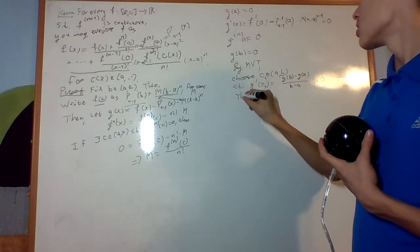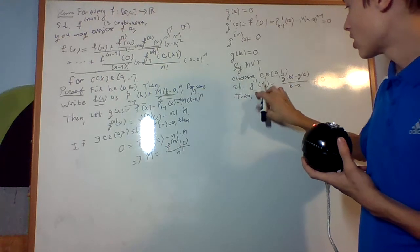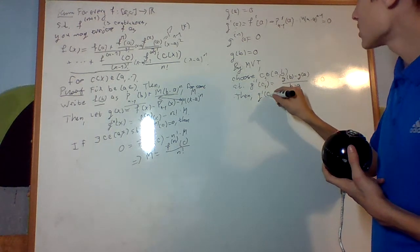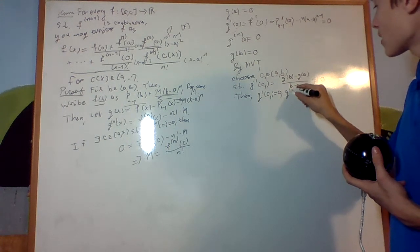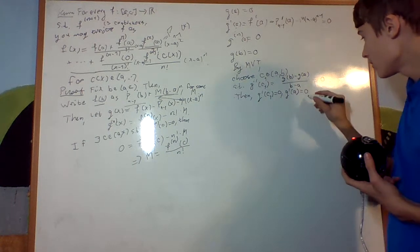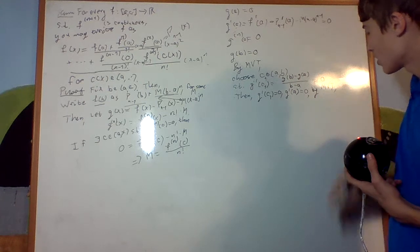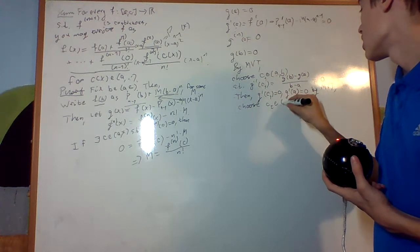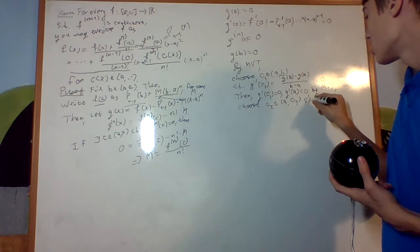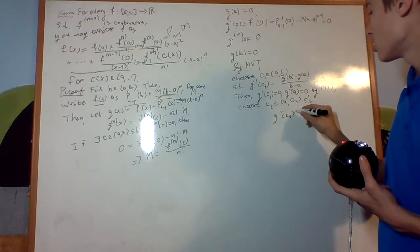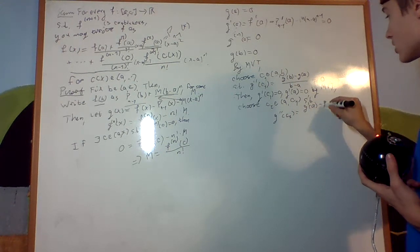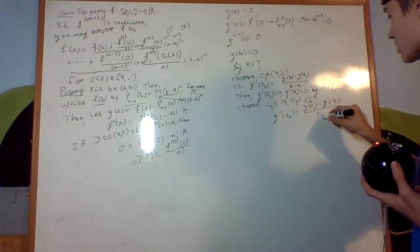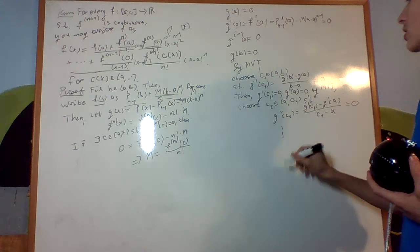we also know that g prime of c1 is 0, and g prime of a is 0, right? So then, by the mean value theorem, choose c2 an element a until c1, such that g double prime of c2 is going to be g prime of c1 minus g prime of a over c1 minus a, which is 0. Continue that down,